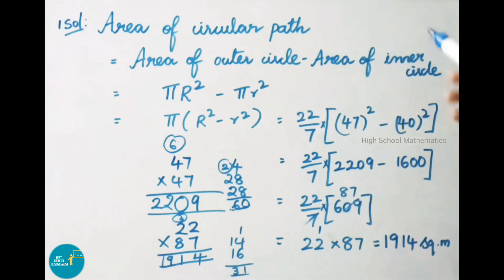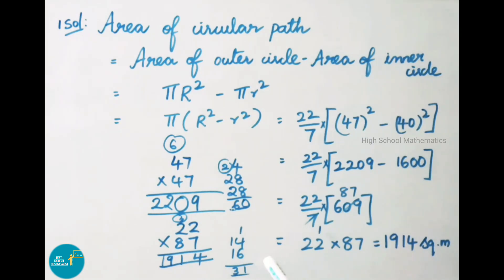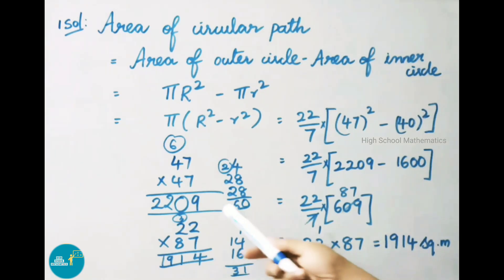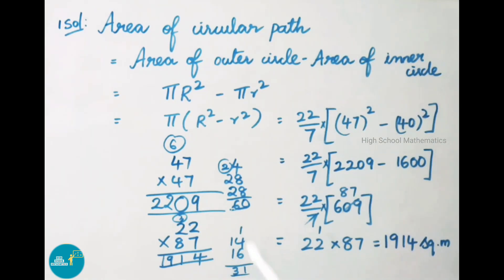Therefore, area of circular path is 1914 square meters. Here I have shown multiplication of a two-digit number in a single step — quick multiplication. You can also use normal multiplication, but this is useful for doing calculations quickly.